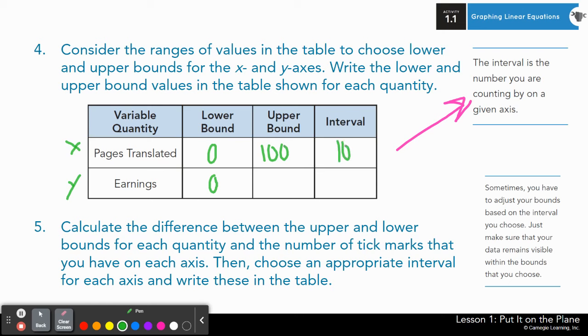And for our upper bound, when it comes to our earnings, our highest is 2,625. We're going to round that up to 3,000. And if we've got 10 spaces, my intervals will be in sections of 300. Quickly get this copied because now we're moving on to graphing.